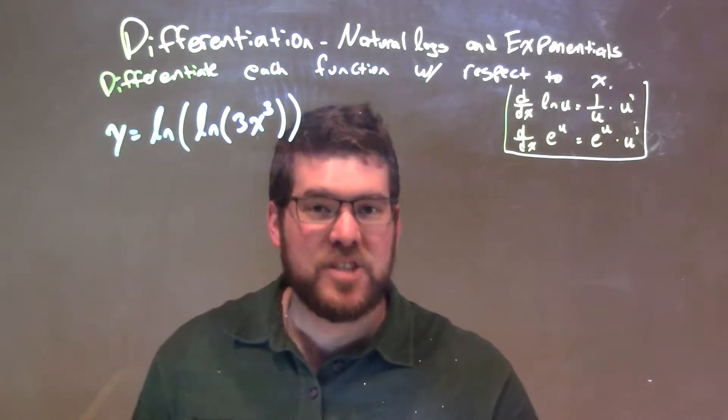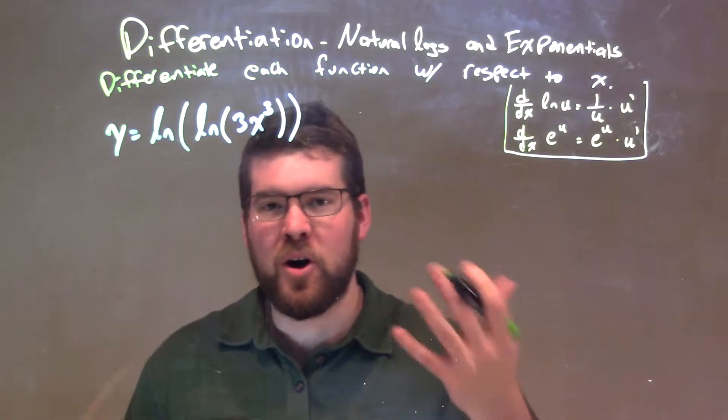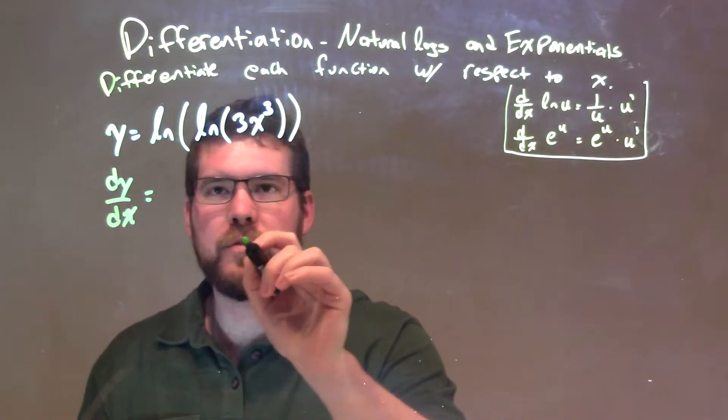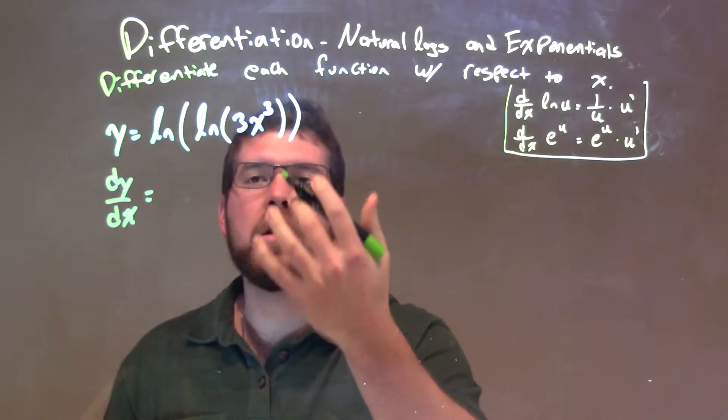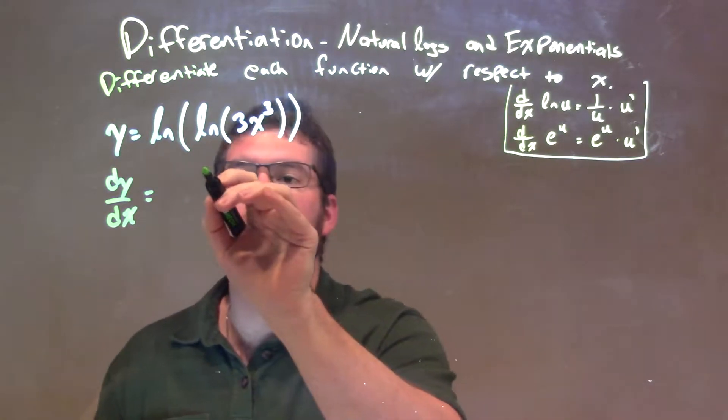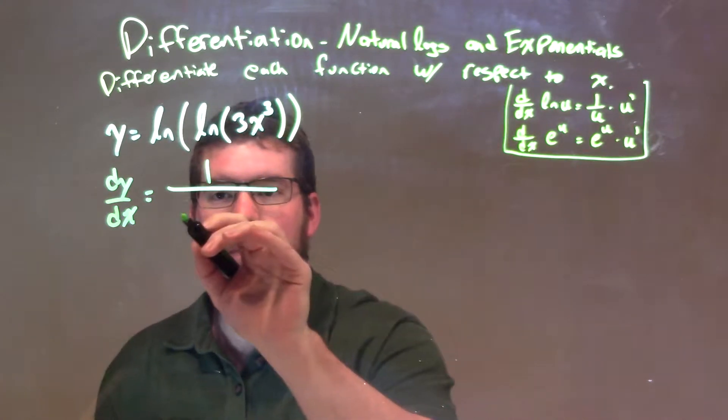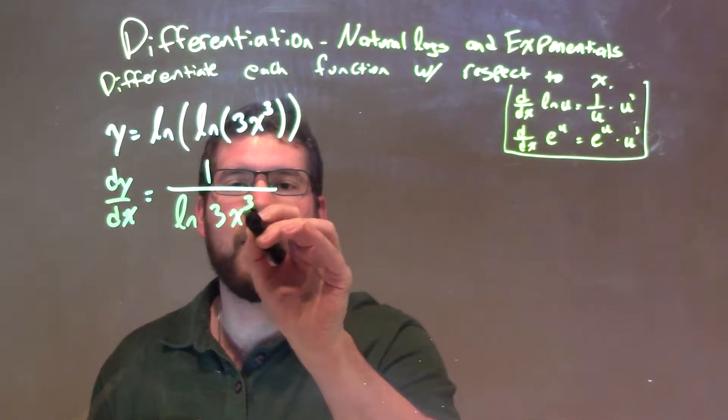We're applying the chain rule twice with some natural log rules as well. We have dy/dx right here is equal to, well, the derivative of the natural log of whatever on the inside is 1 over the inside. So the inside here is just this natural log of 3x to the third power, natural log of 3x to the third power.